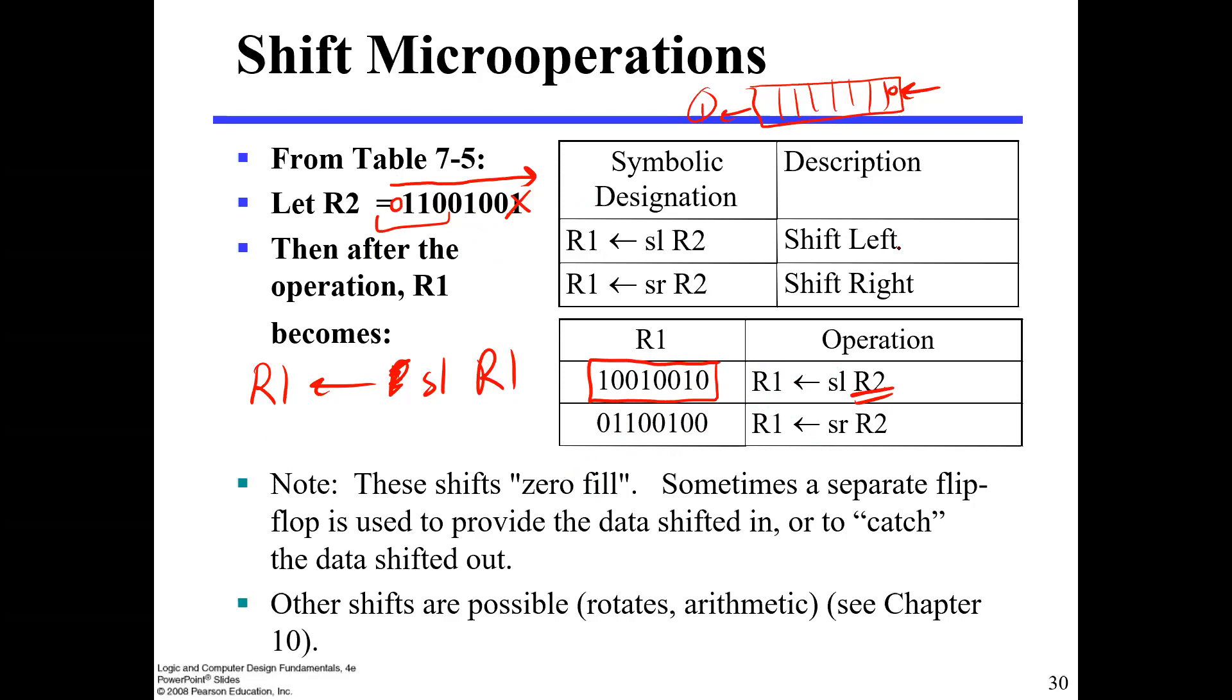So to note that these shifts, or these types of shift, will zero fill. Zero fill means I will add a bit that enters the register as zero, whether from the right or from the left. There are special shift registers that we can make, or special shift operations, that we can shift a specific value. You shift in zero or you shift in one. And you can also add some hardware to catch the bit that you are throwing out.